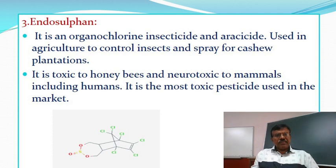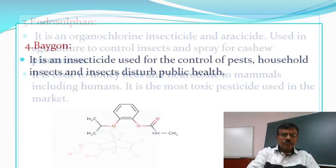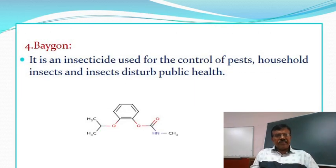Endosulfan is an organochlorine insecticide and acaricide used in agriculture to control insects and sprayed for cashew plantation. It is toxic to honey bees and neurotoxic to mammals, including humans. It is the most toxic pesticide used in the market. Baygon is an insecticide used for the control of fleas, household insects and insects that disturb public health.